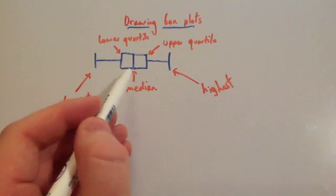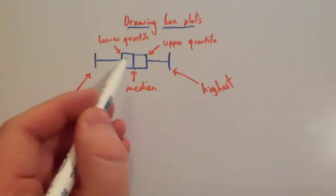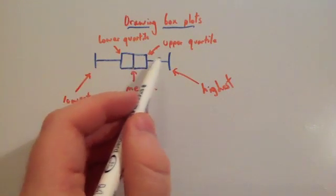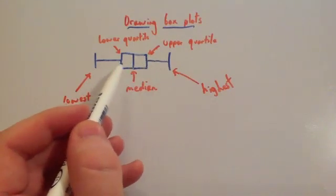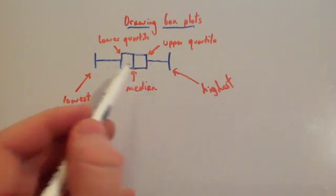From here to here would represent the bottom 50% of the information, from here to here would represent the top 50%, and from here to here, the interquartile range represents the middle 50% of the data.